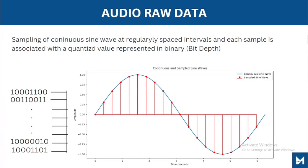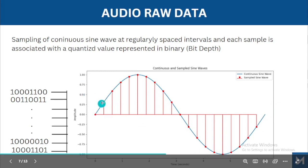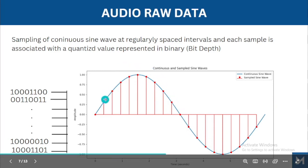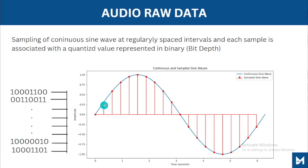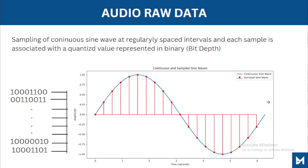Just to recap what raw data is: we have an audio sine wave; when you sample it, you get digital audio, where each sample is represented by an amplitude or quantized value expressed in binary. The collection of all those samples in binary format is called raw data. So when you open raw data, it is essentially the binary representation of all your actual audio samples.